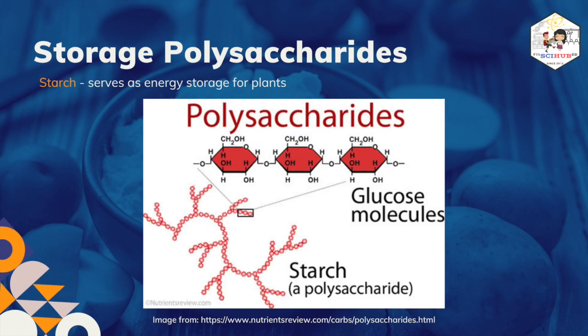Let's start with storage polysaccharide starch. Starch is the stored form of sugars in plants and is made up of a mixture of two polysaccharides, amylose and amylopectin. The excess glucose synthesized from photosynthesis is stored in the different parts of plants as starch. In seeds, starch serves as the main food source during germination.